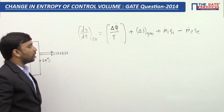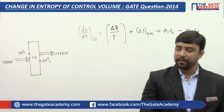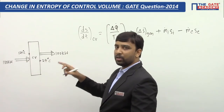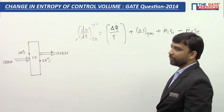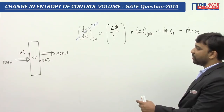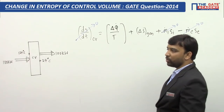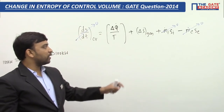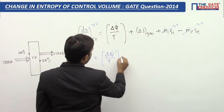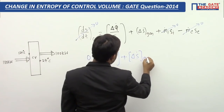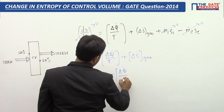For a general control volume, we write the rate of change of entropy as the sum of entropy change due to heat interactions, entropy generation, mass inlet, and mass outlet. Since the system is in steady state, entropy of the control volume does not change with respect to time. Also, since only heat is interacting with this wall and there are no mass interactions, mass inlet and exit terms are zero. Therefore, the rate of entropy generation equals the negative of entropy change due to heat interactions.